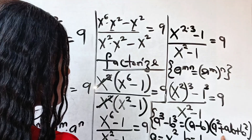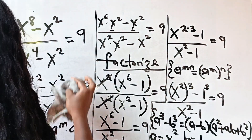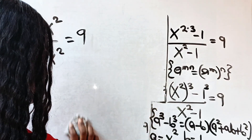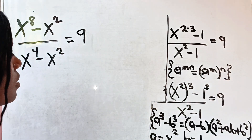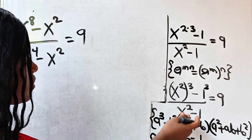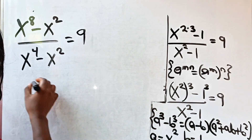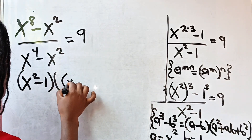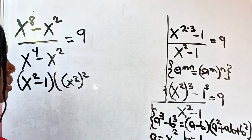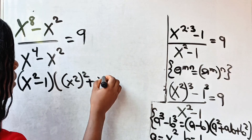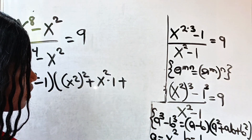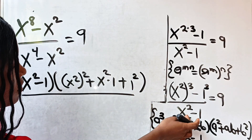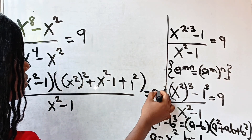We are going to write this in this form. Moving forward, we have a minus b, that is x squared minus 1. Bracket a squared — that is x squared all squared — plus ab, that is x squared times 1, plus b squared, that is 1 squared. Divided by x squared minus 1, is equal to 9.